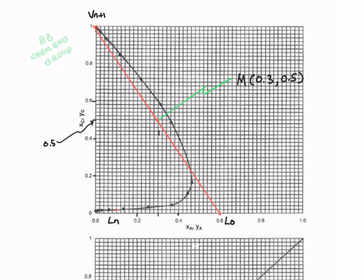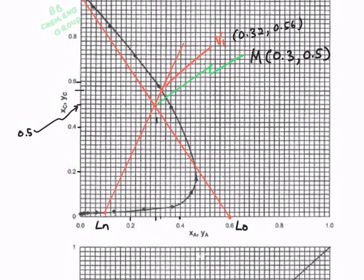Next, draw the line from Ln to M and then extend the line to get your V1. So this is your V1. We can get the coordinates for V1 as 0.32 and 0.56.